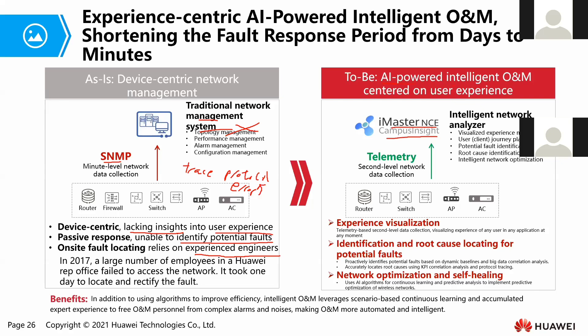To address these issues, we introduce NC Campus Inside. Campus Inside uses AI to provide intelligent O&M centered on user experience. Instead of SNMP, we now use a technology called telemetry. Telemetry is able to collect all data — traffic information, application traffic, wireless signal experience — and all this information is collected by NC Campus in real time.